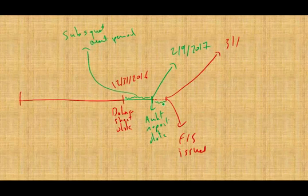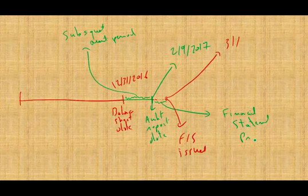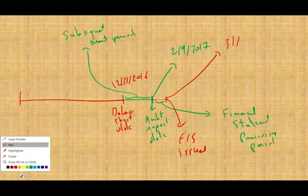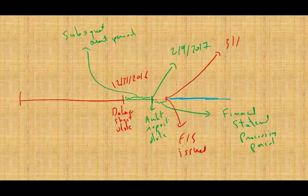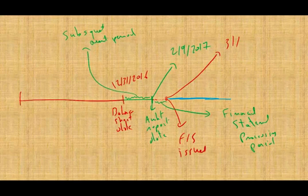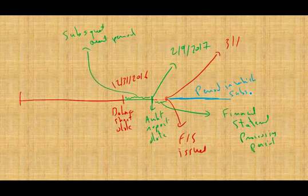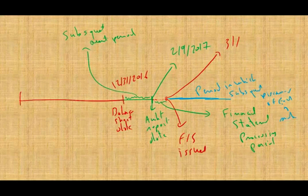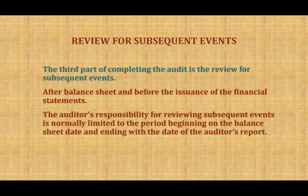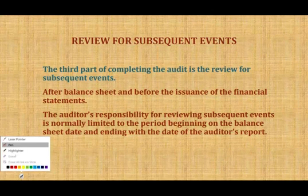The period between the audit report and March 1st is the financial statement processing period. There is also another period after the financial statements are issued — the period in which subsequent discovery of facts are made. We're going to look at that later on. For now, all we're going to focus on is the subsequent event period.